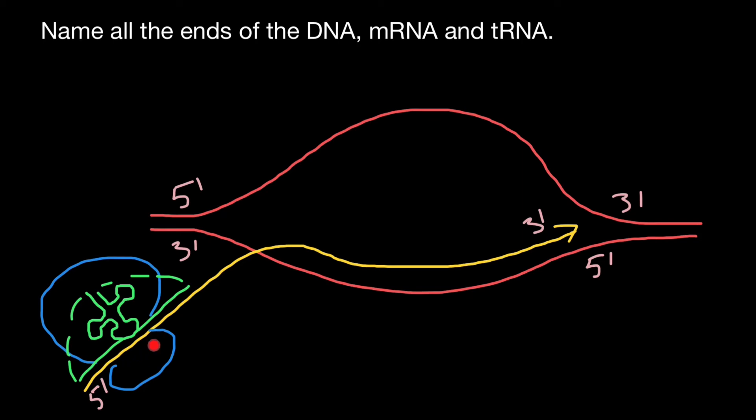On messenger RNA we can find here the codon, and on the tRNA we can find here the anticodon. So orientation is going to be three prime end here, five prime end here. That means five prime end here and three prime end here. And to the three prime end, the amino acid would be attached.